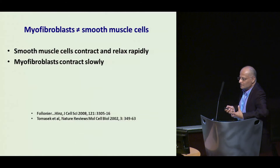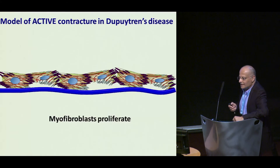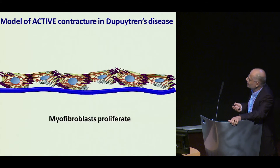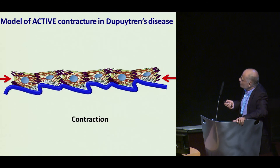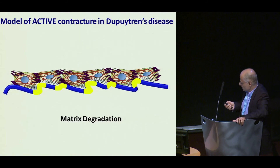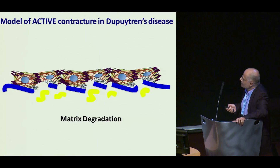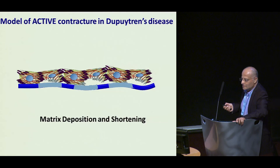The myofibroblasts have a commonality with smooth muscle cells — they share the same contractile protein — but in fact they behave very differently. Smooth muscle cells contract and relax relatively rapidly, whereas myofibroblasts will contract and sustain their contractions. So this is what I think happens — and clearly it's active: myofibroblasts proliferate, they talk to each other, they connect to the matrix, and they contract the matrix. With this high matrix turnover, the cells secrete matrix metalloproteinases which degrade the matrix, but equally they lay down matrix which is now shortened — so the cells contract and produce the matrix, essentially actively leading to Dupuytren's contracture. Thank you.